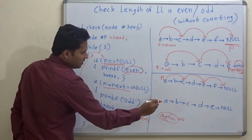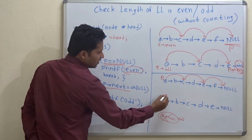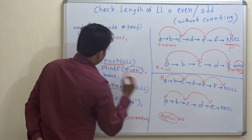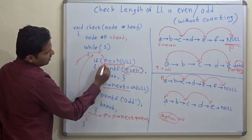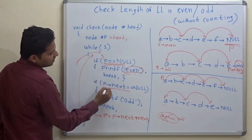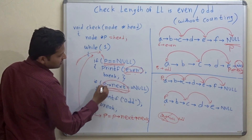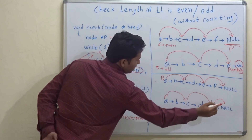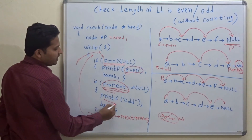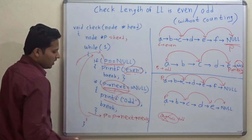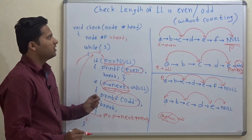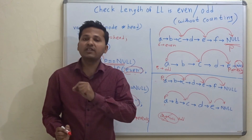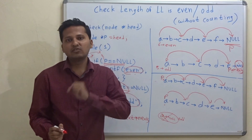And the same in the case of the odd linked list: P will go to C, then P will go to E. In this iteration, P is not null, but P->next will be null, so we print odd. This is how we check if the length of the linked list is even or odd without counting the length of the linked list.